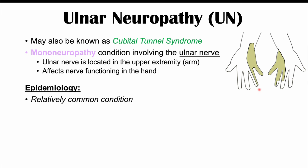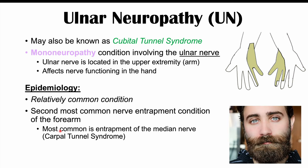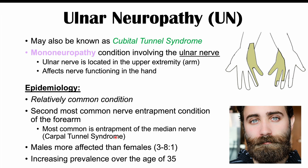Ulnar neuropathy is a relatively common condition. It is the second most common nerve entrapment condition of the forearm, second to entrapment of the median nerve, which is carpal tunnel syndrome. Males are more affected than females, with a ratio of three to eight males for every one female, and there is an increasing prevalence over the age of 35.